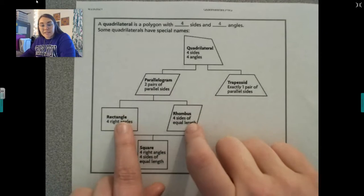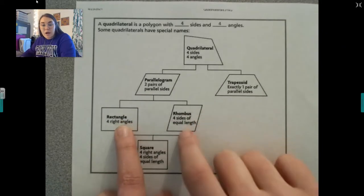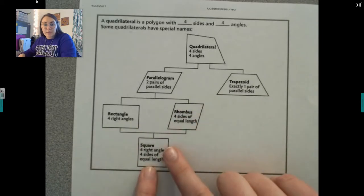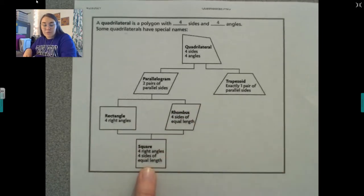Then you've got to look and see, is it a rectangle with four right angles or a rhombus with four sides of equal length? And if it has both, that means it is a square with four right angles and four sides of equal length.